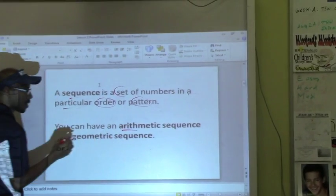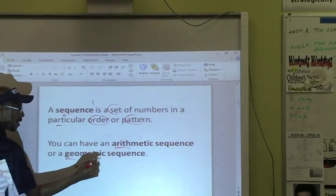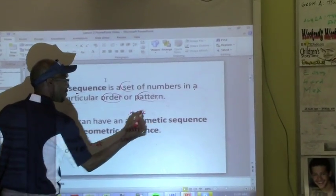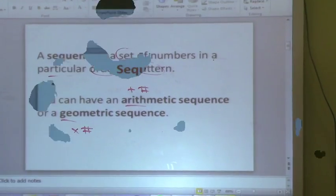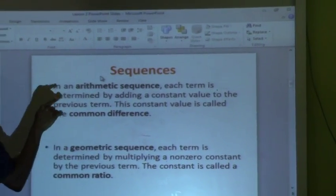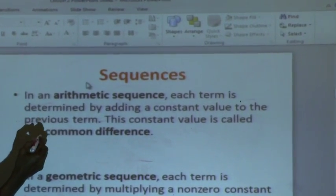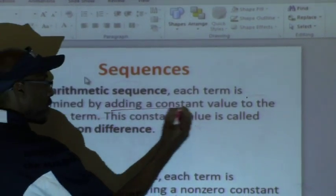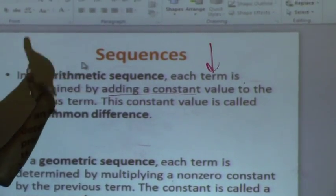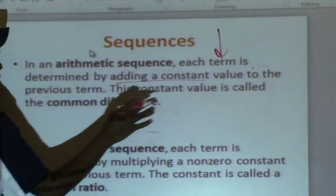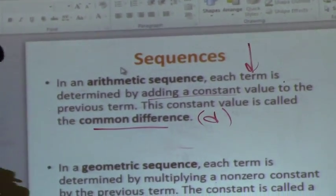You can have an arithmetic sequence or a geometric. Under geometric, we're going to put multiply a number. And arithmetic, we're going to put add a number. Each term is determined by adding a constant value to the previous term. In English, each term is determined by adding a constant to get the next number. Term, the next number in line. You add some number to it. You can add four, add four, add four. This constant value is called the common difference. In other words, the number that you keep adding over and over. Common difference, and the letter they use for that is D.